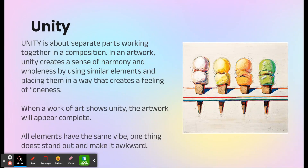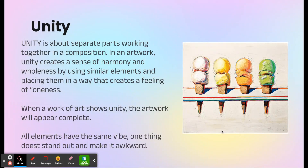So what is unity? Unity is about separate parts working together in a composition. In an artwork, it creates a sense of harmony and wholeness by using similar elements placed in a way that creates a feeling of oneness. This work of art shows unity because it's all the same style — there's a constant background color, every shadow goes the same way, the ice creams are all similarly shaped. It would not show unity if one ice cream cone were upside down, very large, melting, and neon red — that would look very different. Unity means everything has the same vibe and nothing stands out in an awkward way.